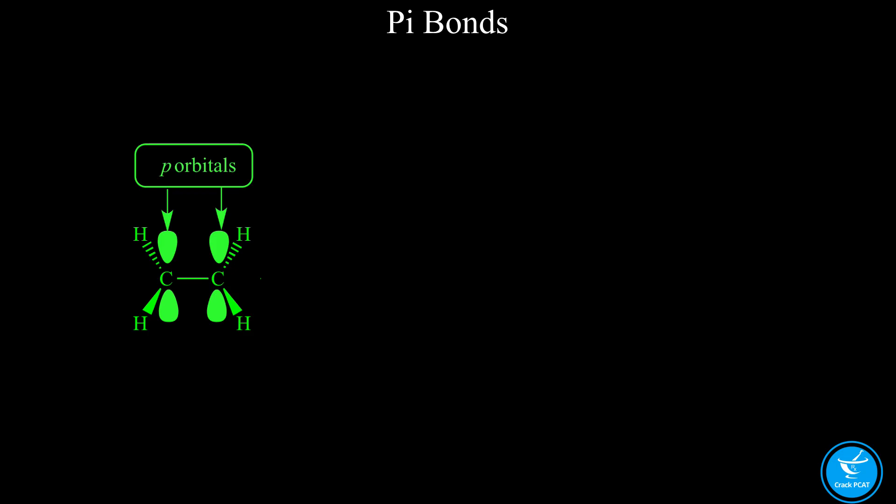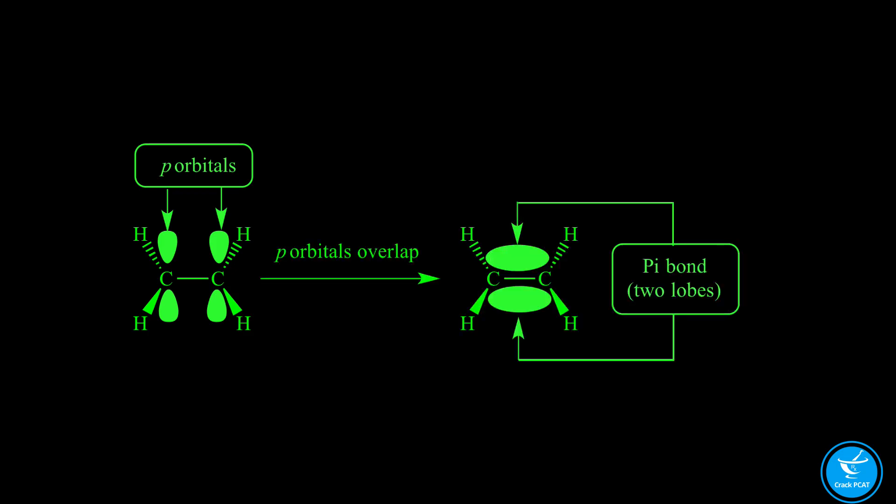P orbitals are the ones that often form pi bonds, and we use the Greek letter pi to represent these bonds when doing a molecular orbital diagram.